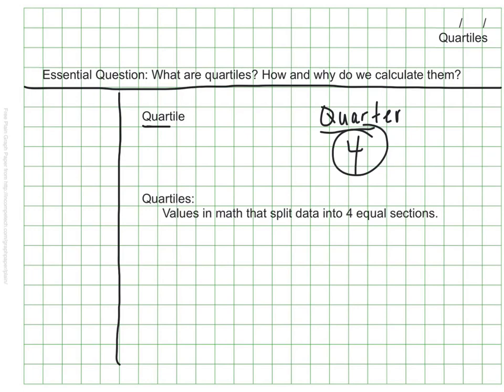Quartiles are values in math that split data or a data set into four equal sections. Each of these sections is a quarter of the data or one-fourth of the data. Let's see how we find our quartiles and what this tells us. I'm going to turn my page and give you a set of data to work with.